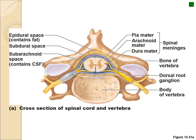The white matter on the outside means axons are running up and down. The gray matter is actually the integration center that controls reflexes and acts like a mini brain — with ganglia running up and down and side to side in that little butterfly-shaped region.